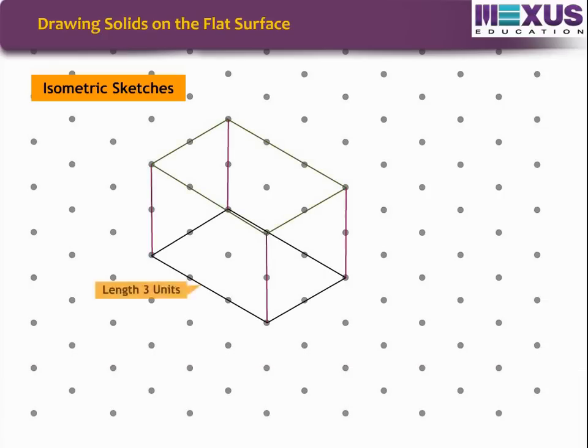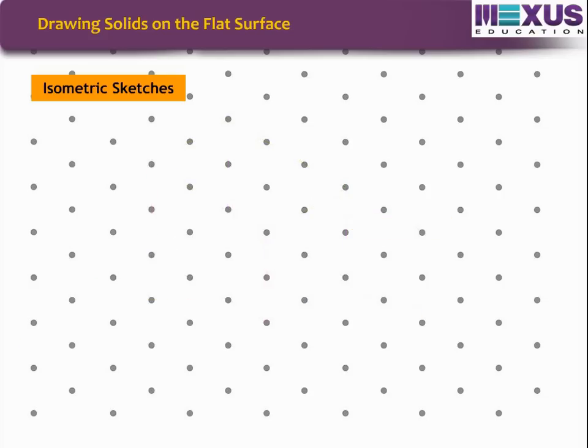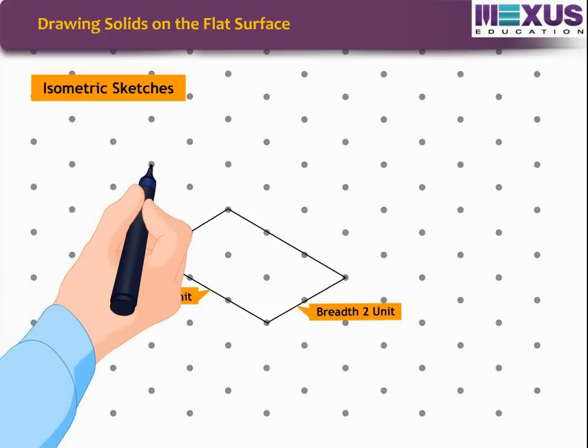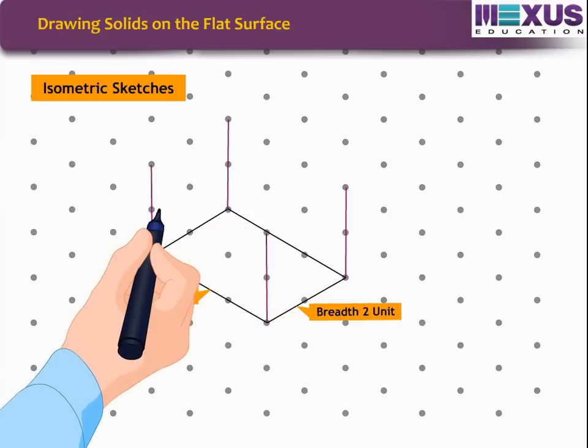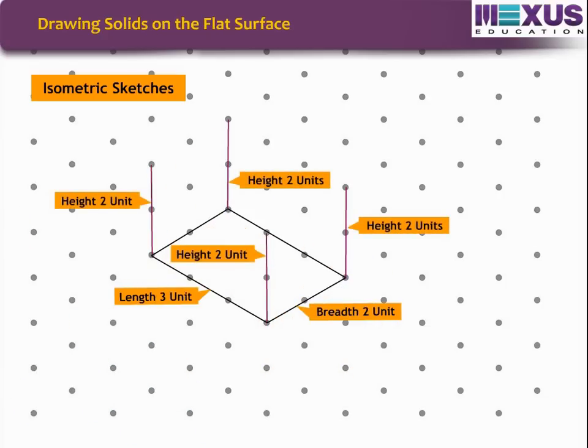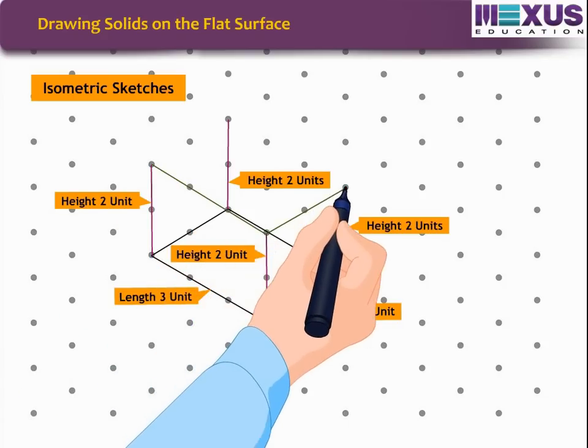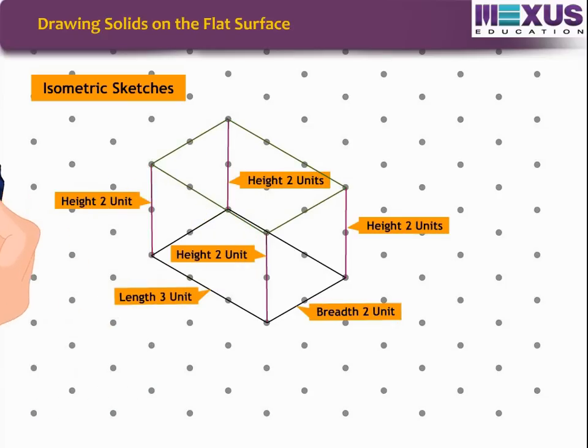Let's try to draw the sketch of a cuboid of length 3 units, breadth 2 units, and height 2 units. First, draw a rectangle of length 3 units and breadth 2 units to show the front face. Then draw 4 parallel line segments, each of length 2 units, starting from the 4 corners of the rectangle. Finally, connect the matching corners with appropriate line segments. The isometric sketch of the cuboid is formed. Observe that the measurements are of the exact size, which is not the case with oblique sketches.